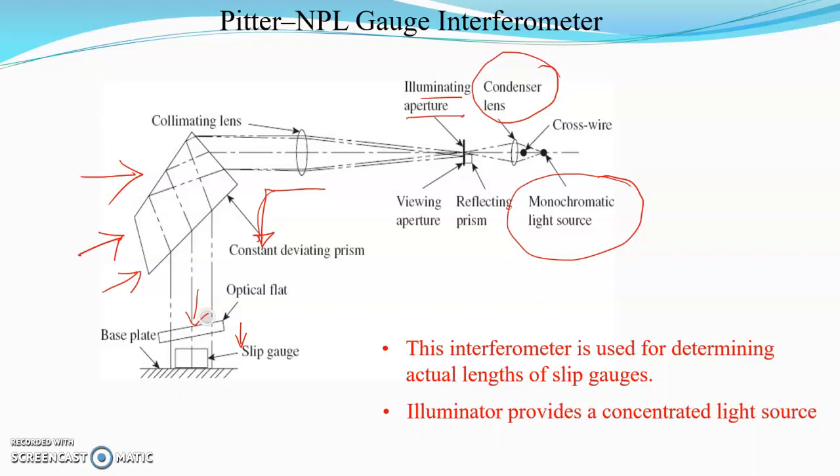One reflection is from the bottom surface of the optical flat, one from the top surface of the slip gauge (the workpiece), and the third ray is reflected from the top surface of the base plate.